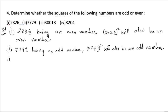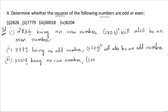For the third number, 30018, the last digit is eight, which is an even number. For 30018 squared, the square of eight is 64, giving units digit four — that is an even number, so the square will also be an even number.